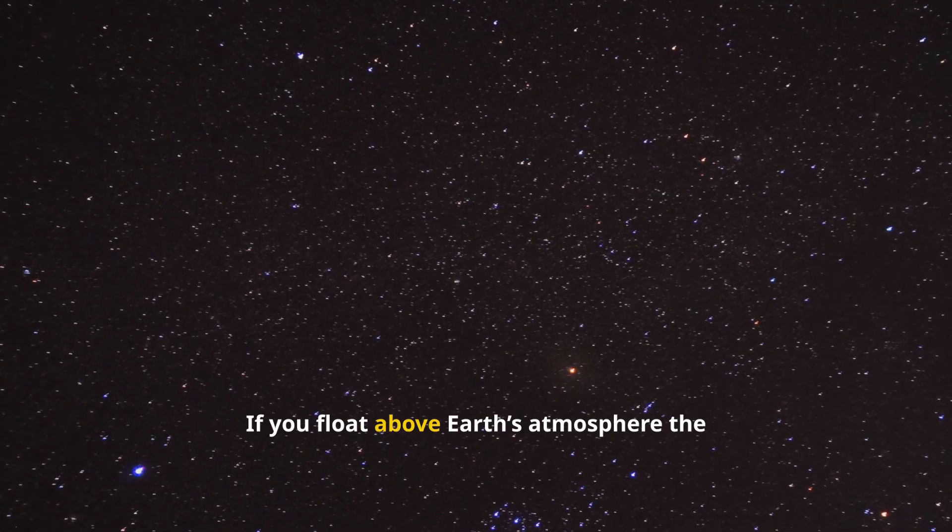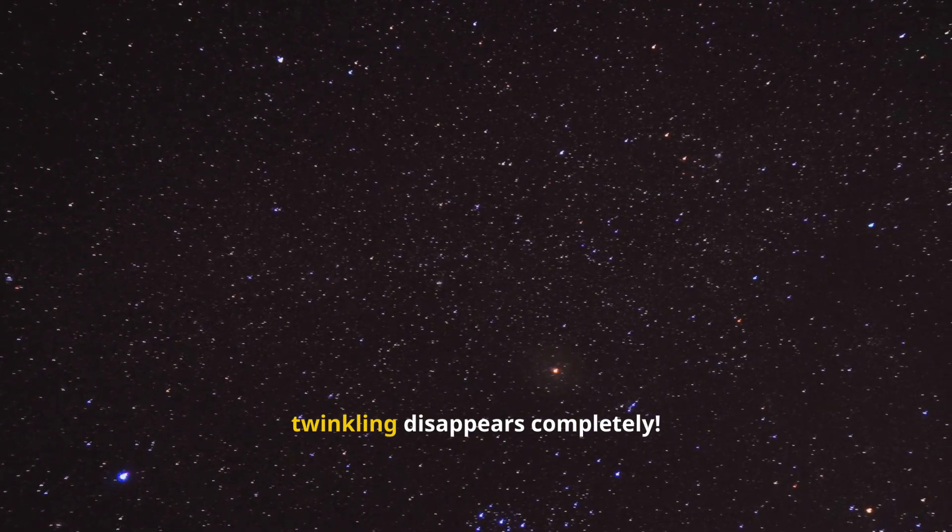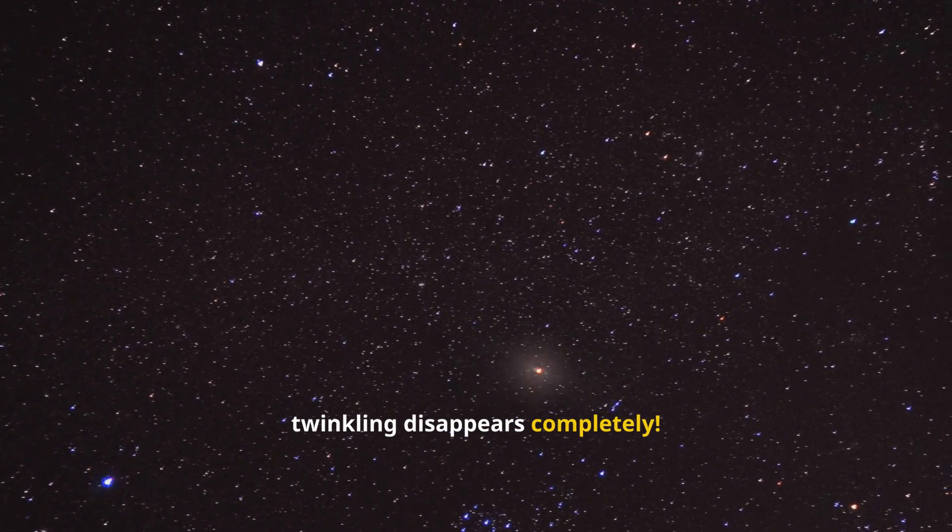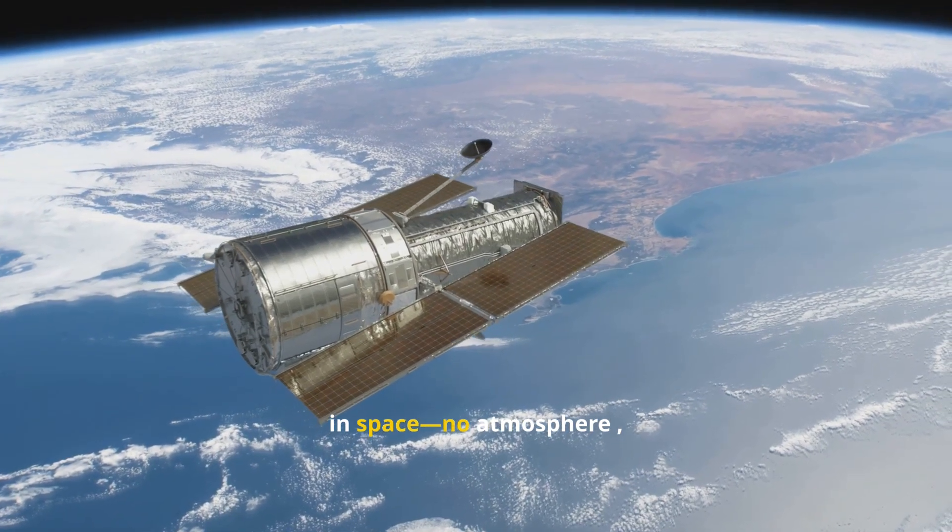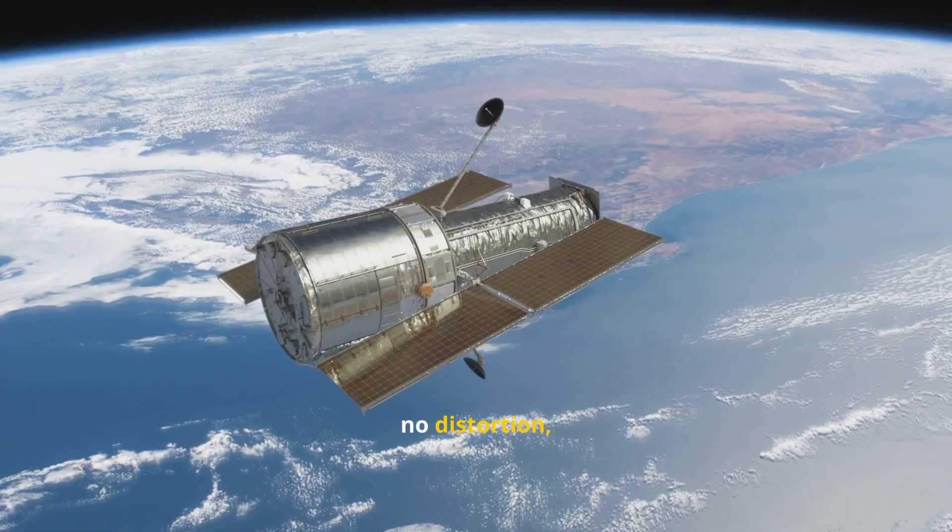If you float above Earth's atmosphere, the twinkling disappears completely. This is why telescopes like Hubble live in space. No atmosphere, no distortion, no twinkling.